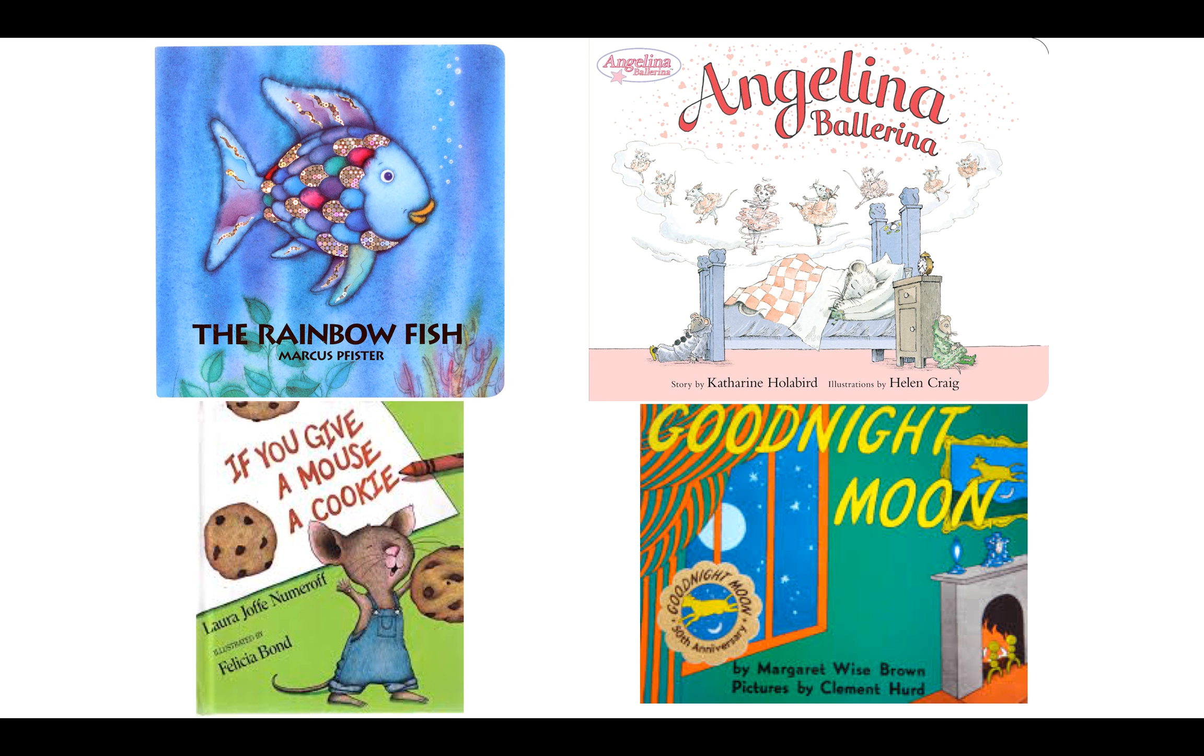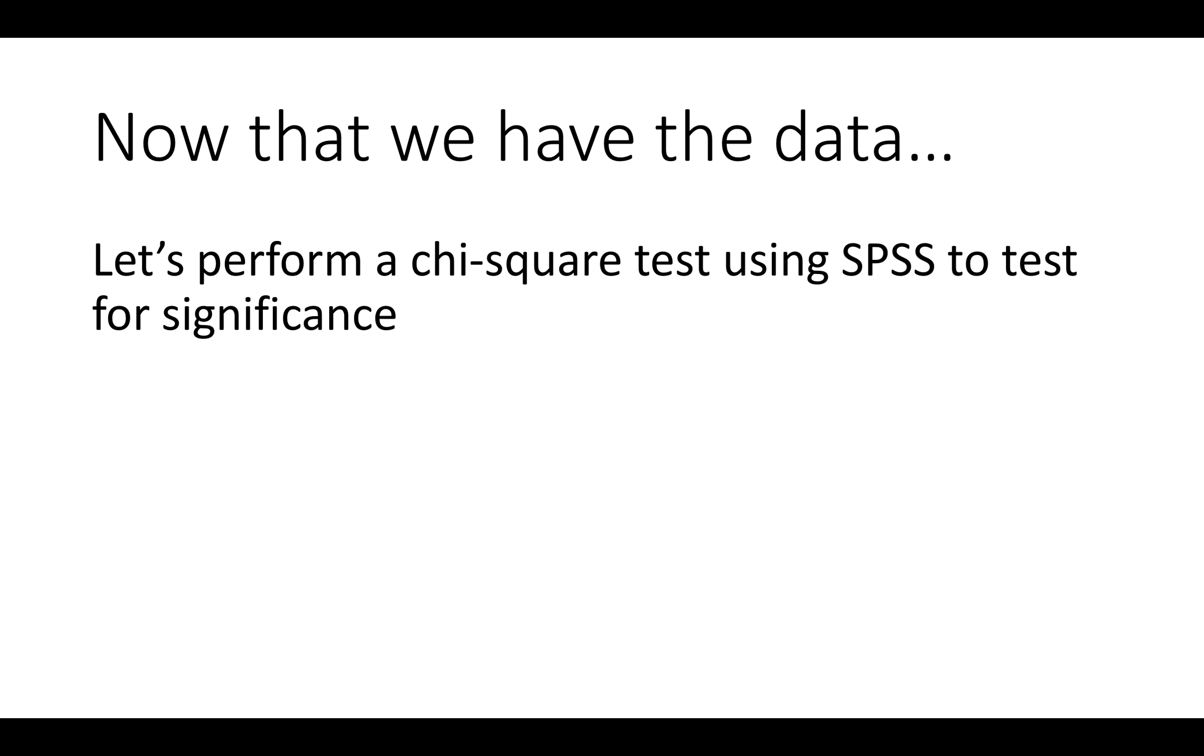Today we're going to be going over how to do a chi-square test for APA Lab 1. In this laboratory you were asked to select four books and to develop a survey to assess preference for illustrations. You interviewed 80 participants showing them the four book covers. So now that we have the data, let's perform a chi-square test using SPSS to test for significance.